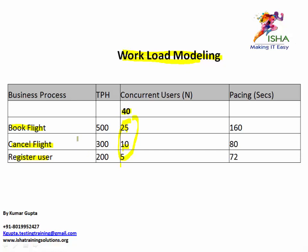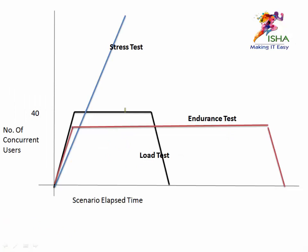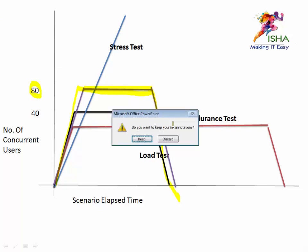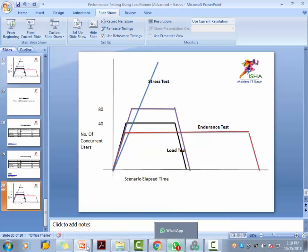There is a 100% user growth, which means all numbers will double. Book Flight goes from 25 to 50, Cancel Flight from 10 to 20, and Register User from 5 to 10. Add them up and you get 80 users. So out of 80 users, 50 are Book Flight, 20 are Cancel Flight, and 10 are Register User. That's the reason I've designed the test with 80 users.